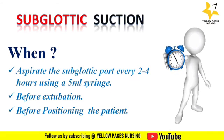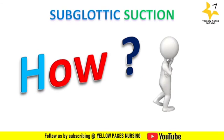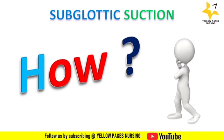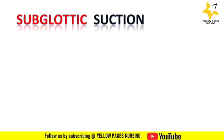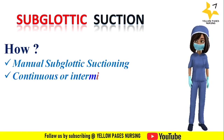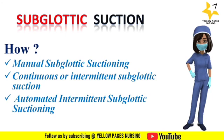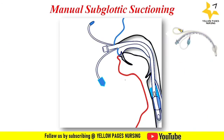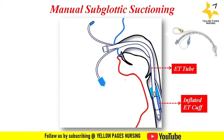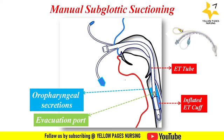There are many ways to perform subglottic suction: manual subglottic suctioning, continuous or intermittent subglottic suction, and automated intermittent subglottic suctioning. Before discussing manual suctioning, you should be aware of the ET tube parts. When we look at this image, the patient is intubated with an ET tube, the cuff is inflated, and just above the cuff there is an opening called the evacuation port.